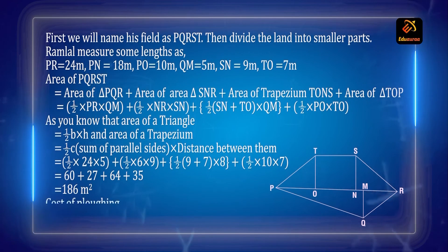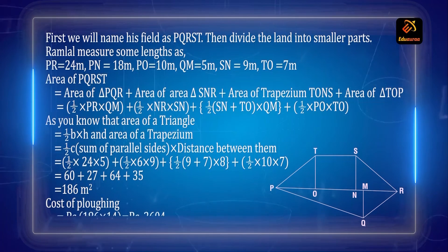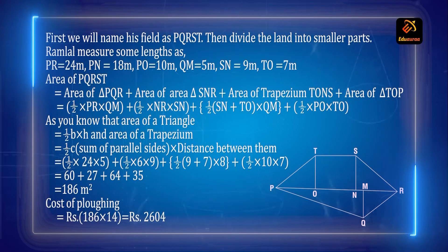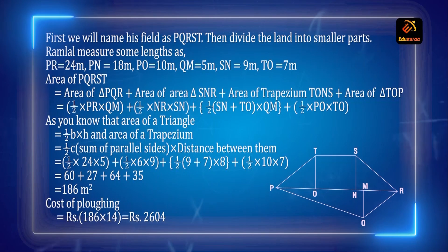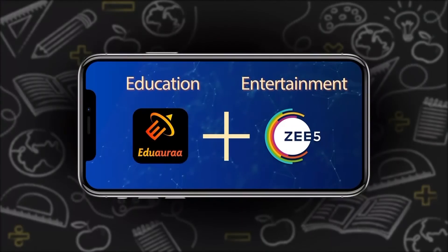So the cost of plowing will be equal to rupees 186 × 14, which equals rupees 2604. So this much money he has to spend to plow his field. Got it!